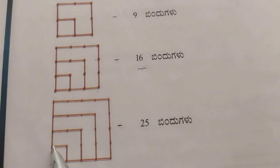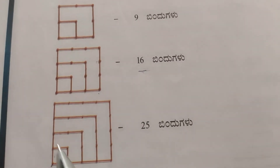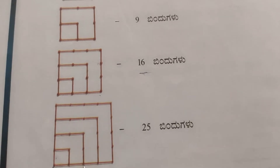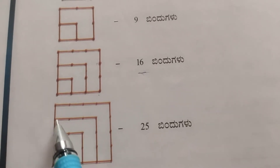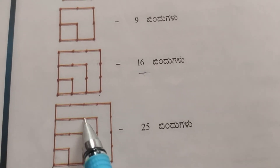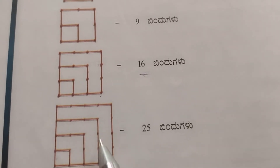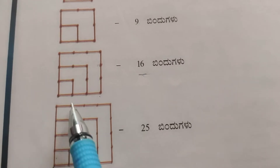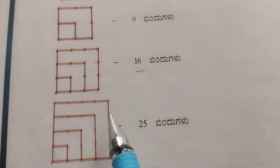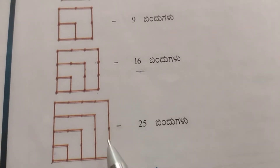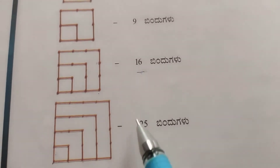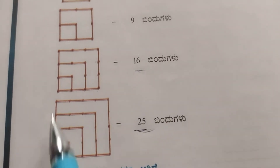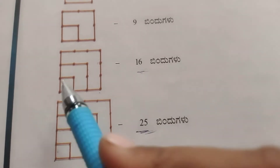Counting the fourth figure: 1 through 25 — twenty-five dots. So these are square numbers.